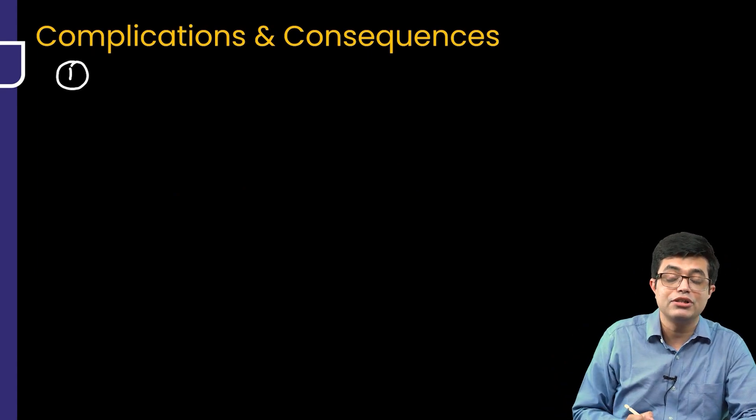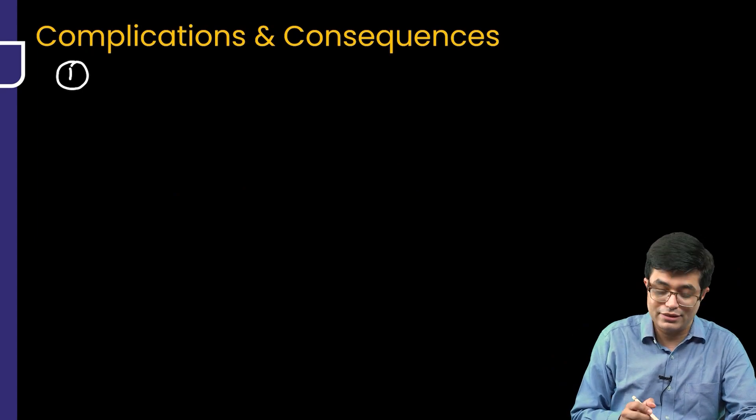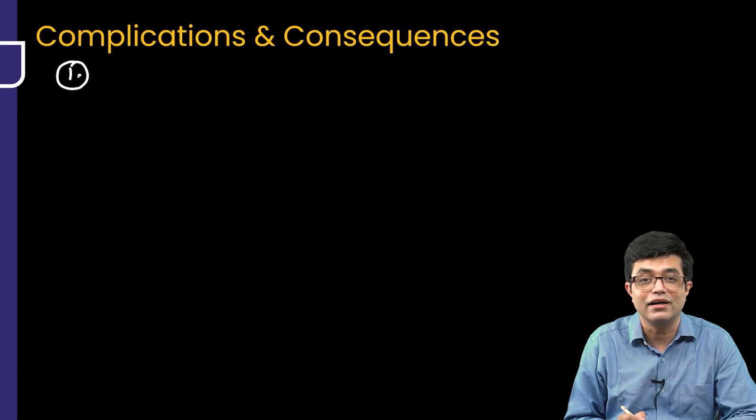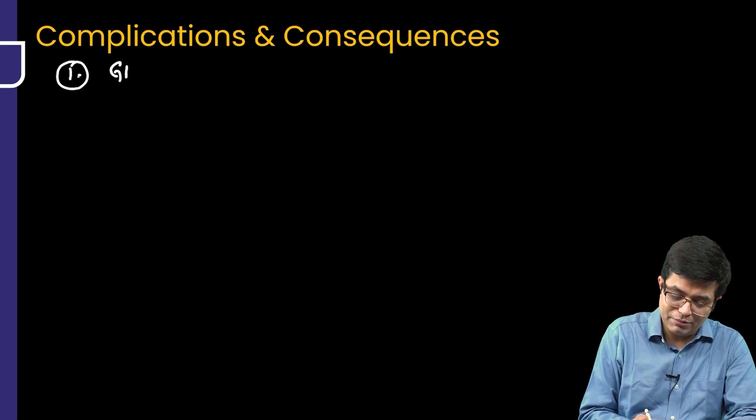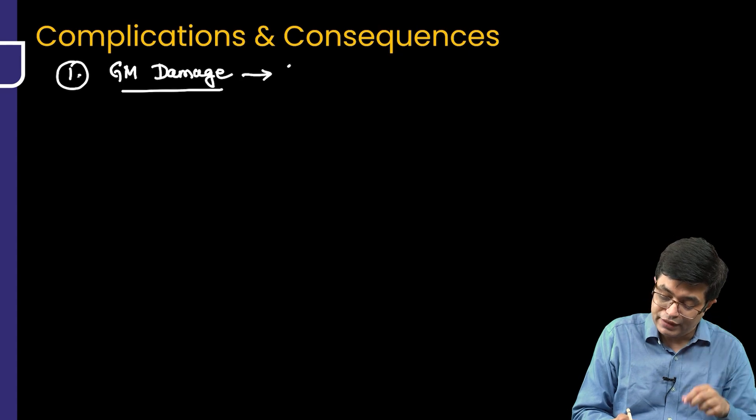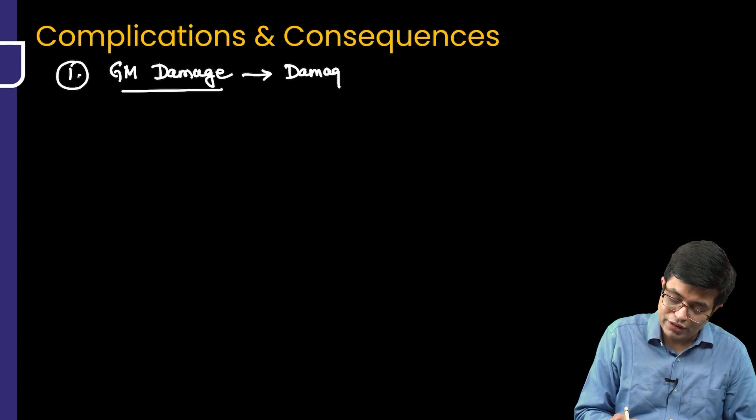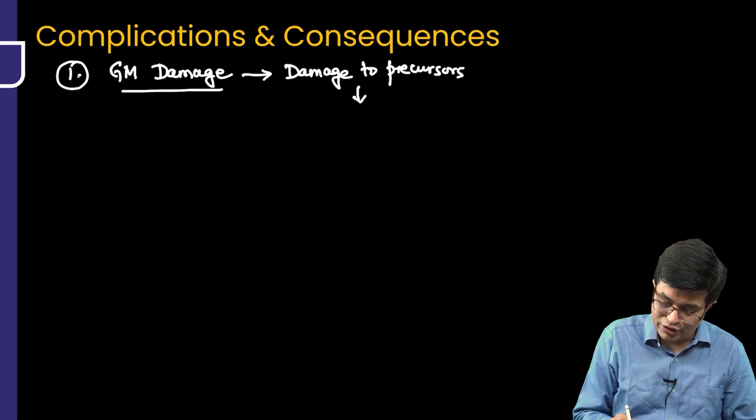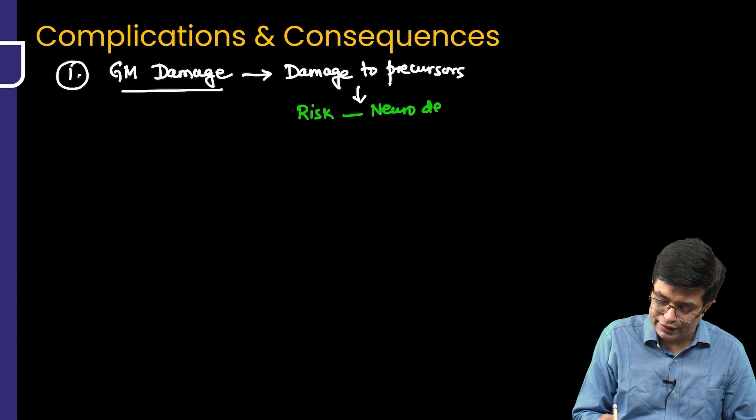First thing you know that if there will be damage, it will be bleeding in the germinal matrix. Germinal matrix is the part where neuronal and glial precursors are developing. There will be germinal matrix damage and this will happen even in grade 1, so there will be damage to the neuronal and glial precursors and they can potentially lead to risk of neurological deficits in later life.